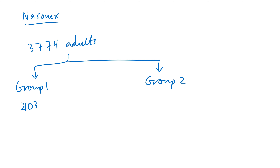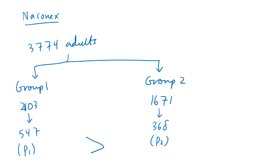That leaves 3774 minus 2103, which is 1671 patients in the second (control) group. From the first group, 547 reported headaches as a side effect. The question is: is there significant evidence to support the claim that the proportion of Nasonex users who experienced headaches is greater than the proportion in the control group? So the claim is that p1 is greater than p2.